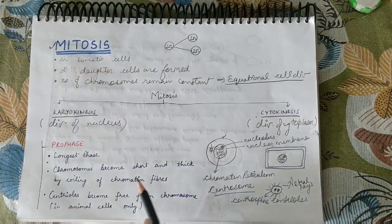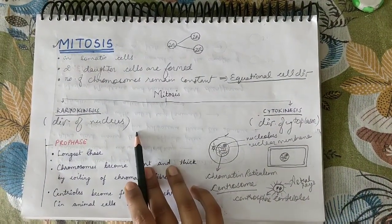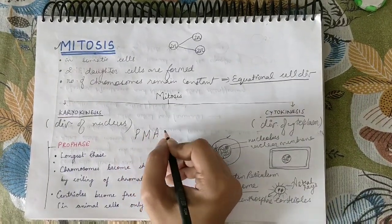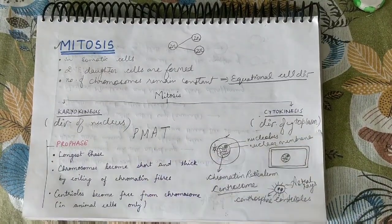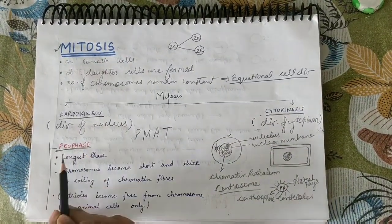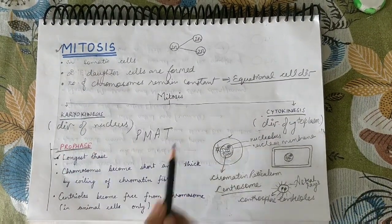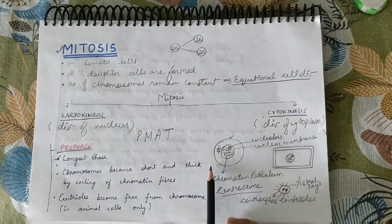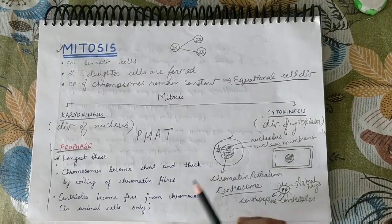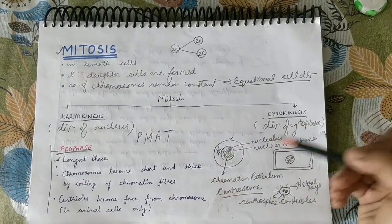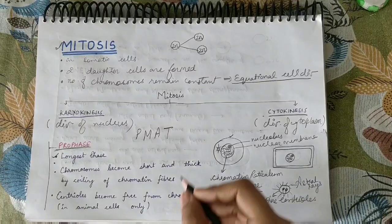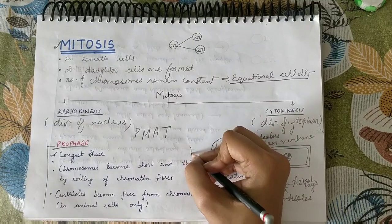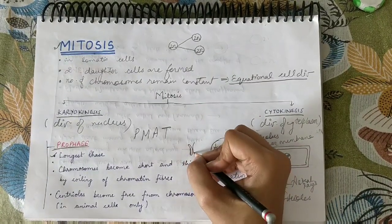Division of the nucleus is studied in four phases: prophase, metaphase, anaphase, and telophase. Prophase is the longest phase of these four. In prophase, the chromatin fibers — chromatin reticulum — start coiling, and convert into thick rod-like structures called chromosomes.